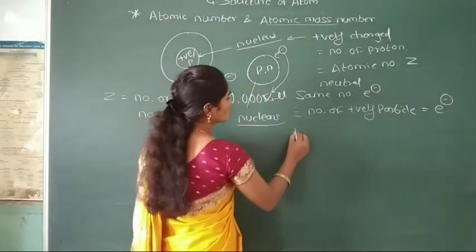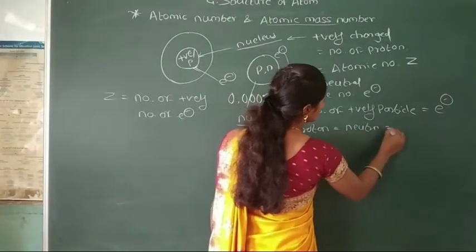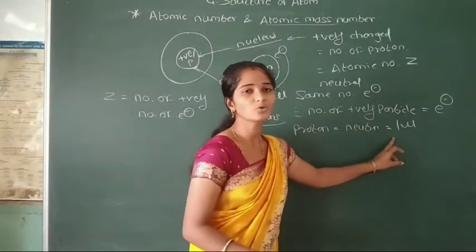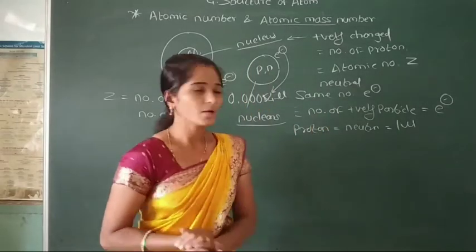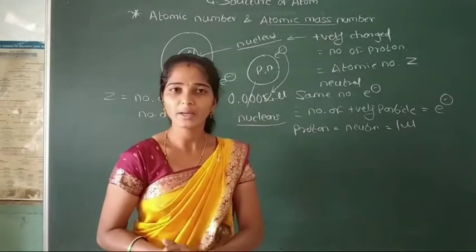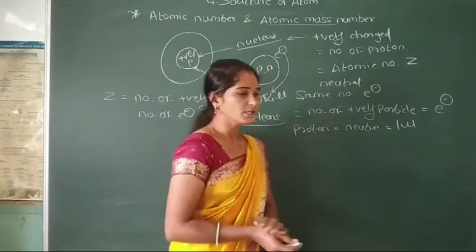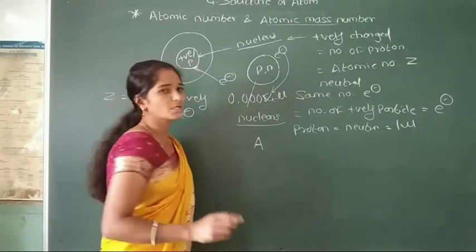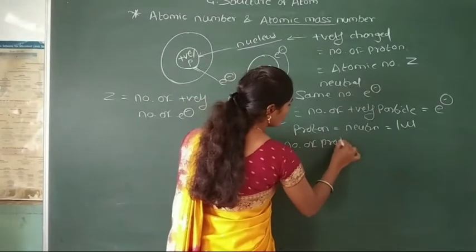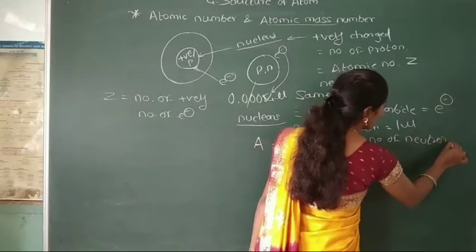The mass of protons is exactly equal to the mass of neutrons, which is 1 mu. That means the atomic mass number of any element is calculated by the sum of the number of protons plus the number of neutrons. The atomic mass number is represented by the symbol A, and is calculated as: A = number of protons + number of neutrons.